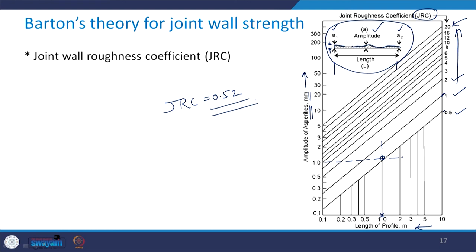Once you know JCS and JRC, substitute them into the expression for shear strength and you will be able to obtain the joint wall strength as per Barton's theory. To summarize, we learned about the single plane of weakness theory and Barton's theory for joint wall strength. This concludes our chapter on constitutive modeling of rocks and rock masses. In the next class we will start a new chapter on application areas for rock engineering, beginning with tunneling. Thank you very much.